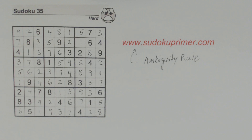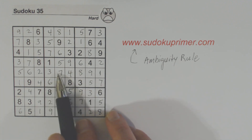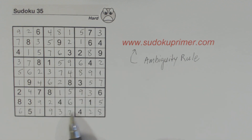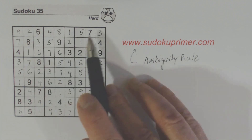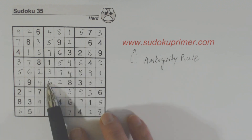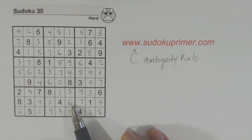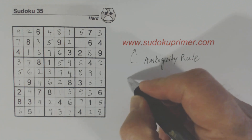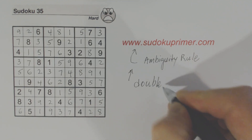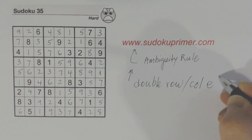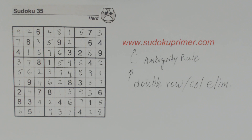That wasn't too bad! If you remember, we were talking about the double row and double column elimination. We had 7 in one of these two cells and a 7 in one of these two cells, so we found this 7. Then we had a double row elimination in combination with a double column elimination in order to find this 6. The double row and double column elimination technique can be quite handy. Look at SudokuPrimer.com and you'll find a section in techniques called double row and column elimination. Thank you for watching and I'll see you again soon.